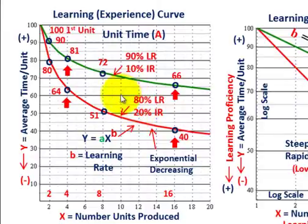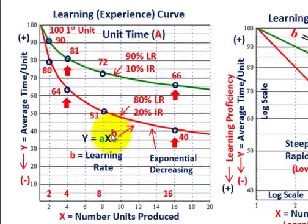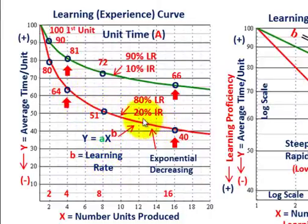When we're talking about this learning curve, we have the function: y, our average time, equals a — which is the cost or time to produce the first unit — times whatever units we're putting out, raised to some exponential. That exponent b is the learning rate. So that's what we're talking about with these two different curves, and you can see they're exponentially moving down on the regular plot.